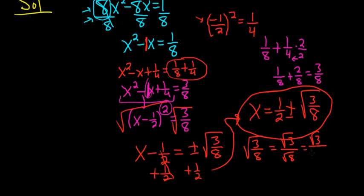In other words, what's the largest factor of 8 that when you take its square root, you get a whole number? So 4. You can write this as √4 × √2. So this is √3/(2√2).